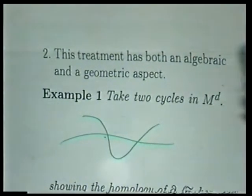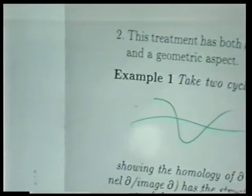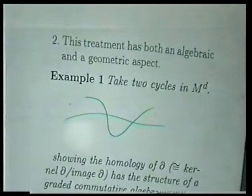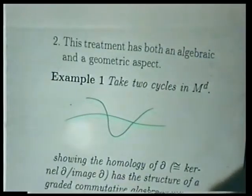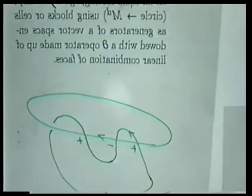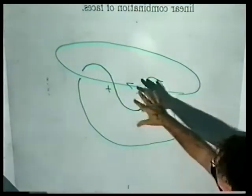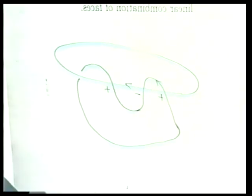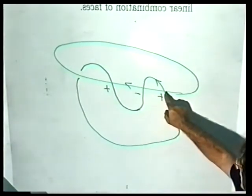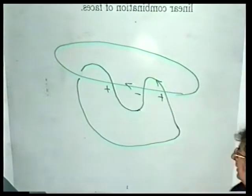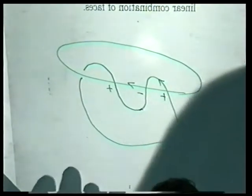Take two cycles in a manifold. These are linear combinations of blocks where the faces cancel in this vector space — the boundary operator is zero. You can imagine that they're in general position, and you look at the intersection. These are like two one-cycles on a surface, and they're intersecting transversely. At each intersection point, you can assign an orientation. In this case, the product of the two one-cycles is a zero cycle.